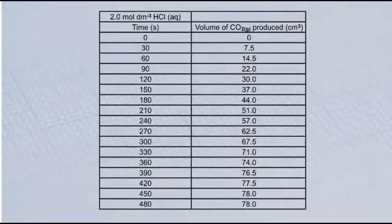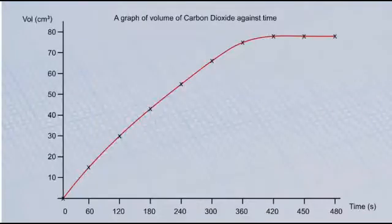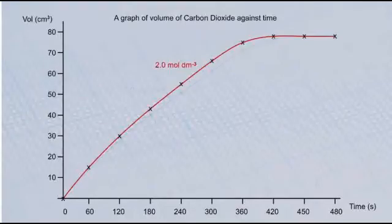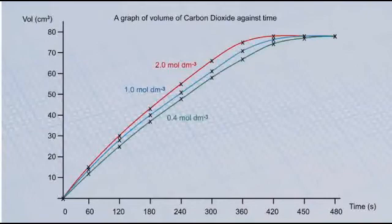Once you have obtained all the results, a graph of volume of carbon dioxide against time is plotted. The experiment is then repeated with different concentrations of hydrochloric acid. The graphs for each concentration of hydrochloric acid should be plotted on the same piece of graph paper. This makes it easier to compare the results and draw conclusions.